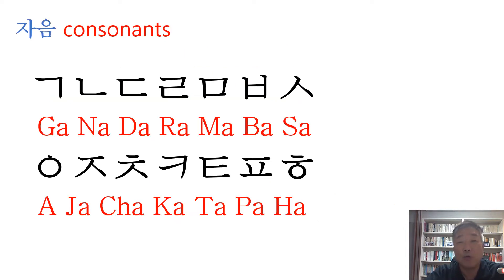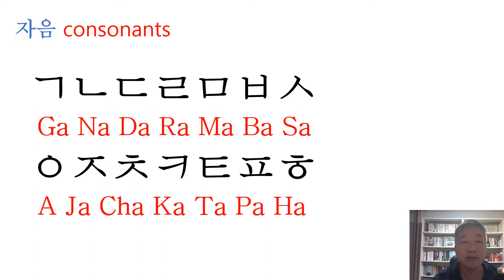Before we actually make the Korean words, let's see the consonants and vowels again. Consonants first: ga, na, da, ra, ma, ba, sa, a, ja, cha, ka, ta, pa, ha.